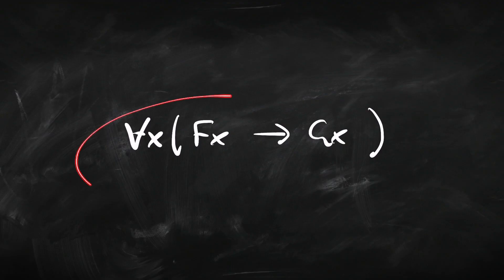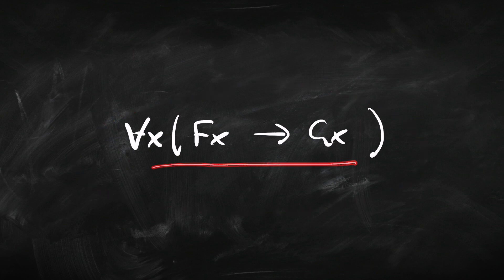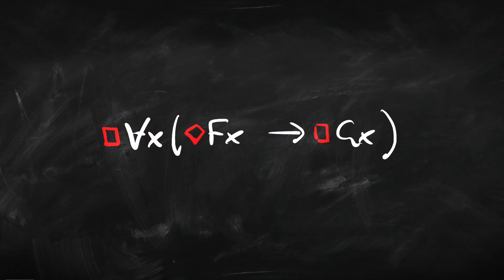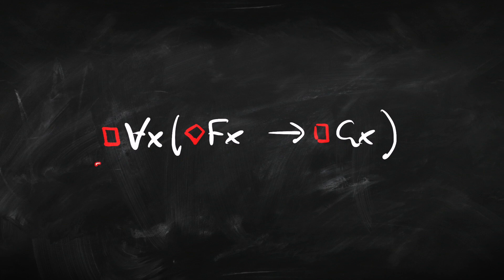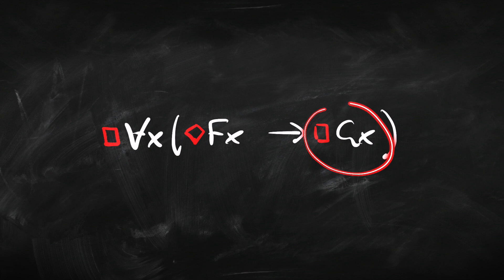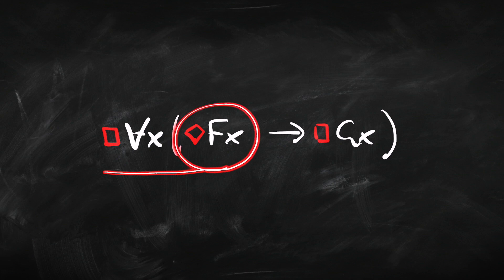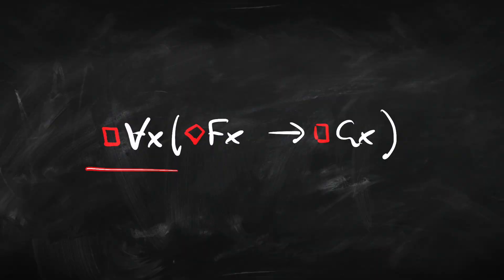With all that, what are the sentences going to look like? Here's a standard sentence of first-order modal logic — it says that all Fs are Gs. We can make it more interesting by adding modalities: a box, a diamond, and another box. This says necessarily everything that is possibly an F is necessarily G, or in other words, necessarily everything that could be F has to be a G. When we look at a sentence like this, there are two ways the modal operators can show up: de dicto or de re.